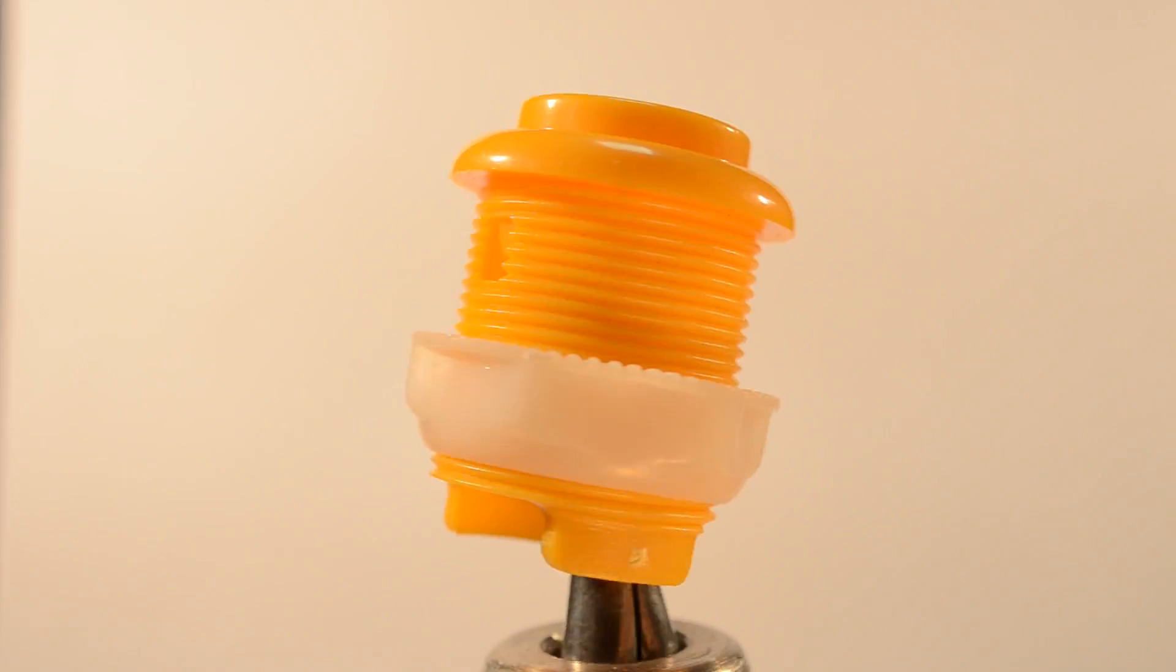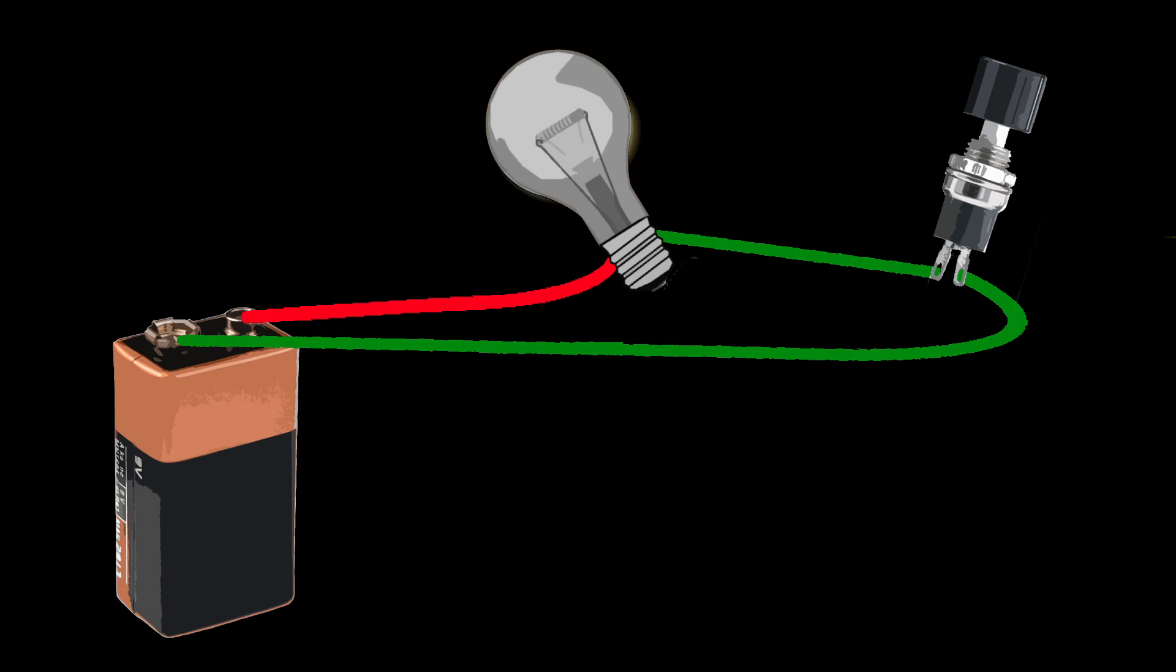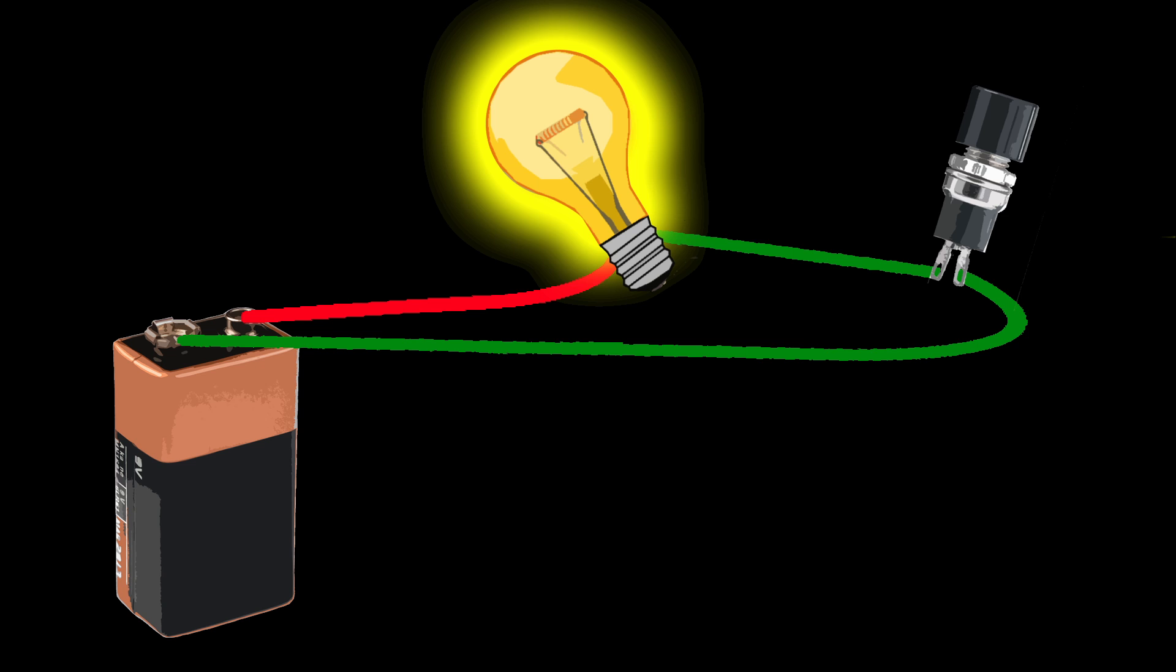You use these two components every day and they're extremely easy to understand. The principle of basic buttons and switches is simply to complete an electrical circuit by manipulating a mechanical object. But when you're using them in projects, you have several things to keep in mind.